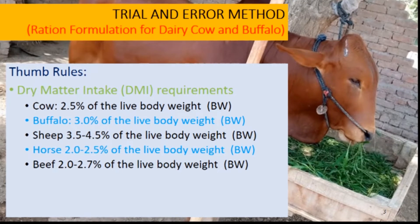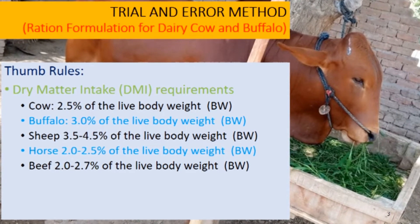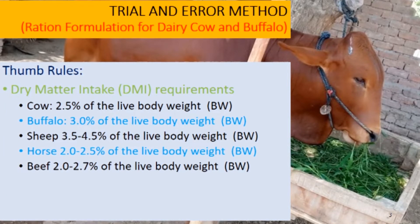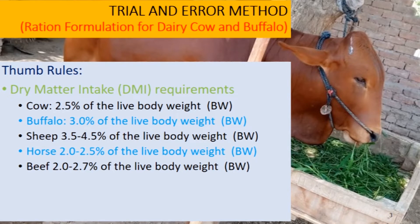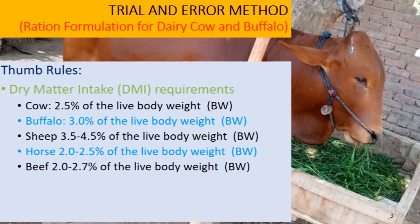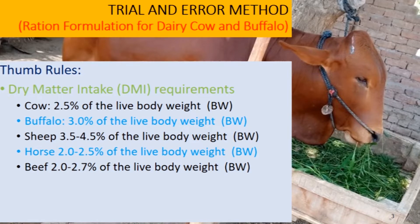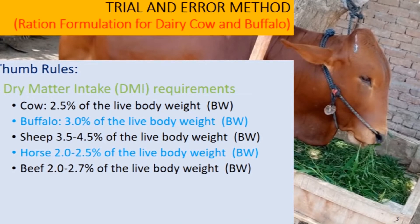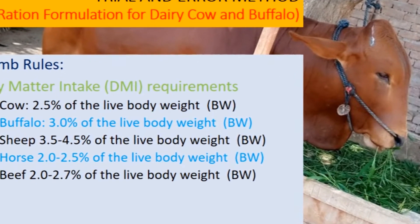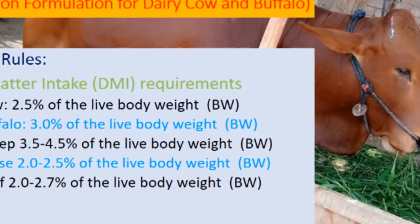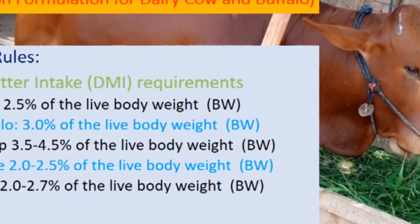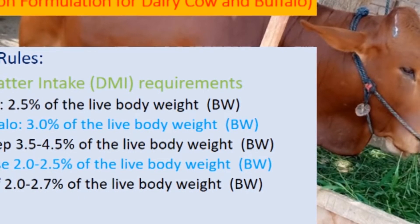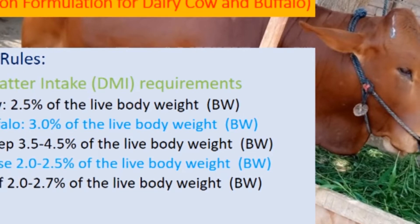Here are some thumb rules we follow when formulating animal diets. For ruminant animals, we consider the intake capacity of the animal — how much dry matter it can consume. In the case of a cow, it is 2.5% of live body weight. For buffalo, it is 3% of live body weight. Similar values apply for sheep, horse, and beef cattle.